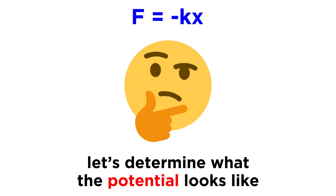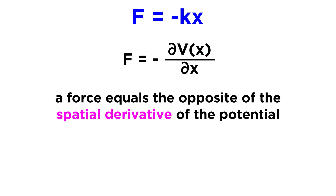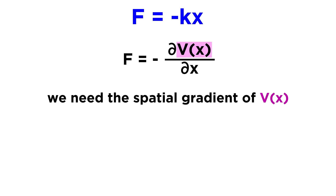From this expression we can determine what the potential looks like. To do this, we can use a known relationship between a force and a potential that we learned earlier in the series. This relationship states that a force equals the opposite of the spatial derivative of the potential. What this means is that if we know the mathematical shape of a potential V of x in scalar form, meaning not as a vector, then we can find the mathematical shape of the force that results from it as the spatial gradient of V of x. That will look like this.